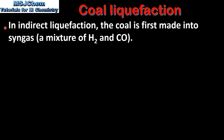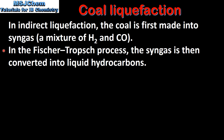In indirect liquefaction, coal is first made into syngas, which is a mixture of hydrogen and carbon monoxide. In the Fischer-Tropsch process, the syngas is then converted into liquid hydrocarbons.